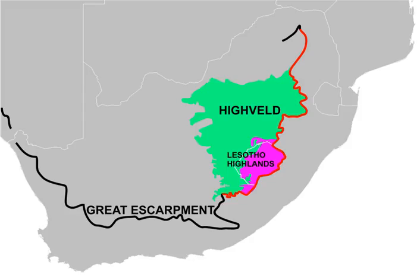Cities located on the Hivelde include Johannesburg, Pretoria, Bloemfontein, Vereniging, Wellcome, Carletonville, and the cities of the West Rand and East Rand. The diamond mining city of Kimberley lies on the border of the Hivelde and the southeastern Kalahari. About half of the gold ever produced in the world has been mined on the Hivelde since 1880. The largest deposits are located in the Witwatersrand, which centers on Johannesburg, with smaller deposits in the northern Free State near Wellcome and Virginia.